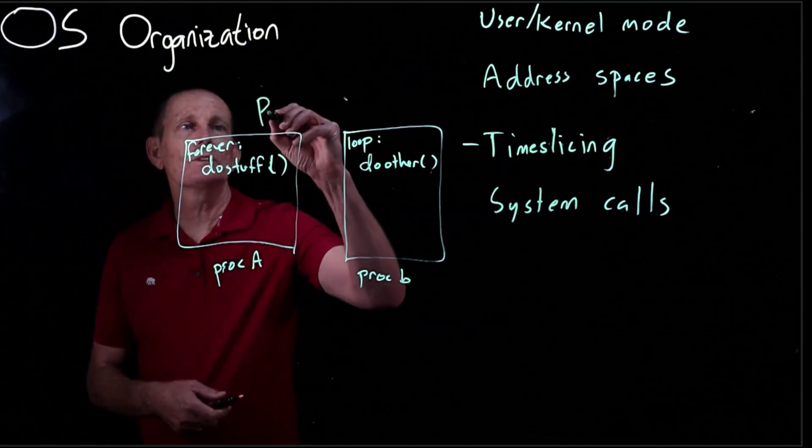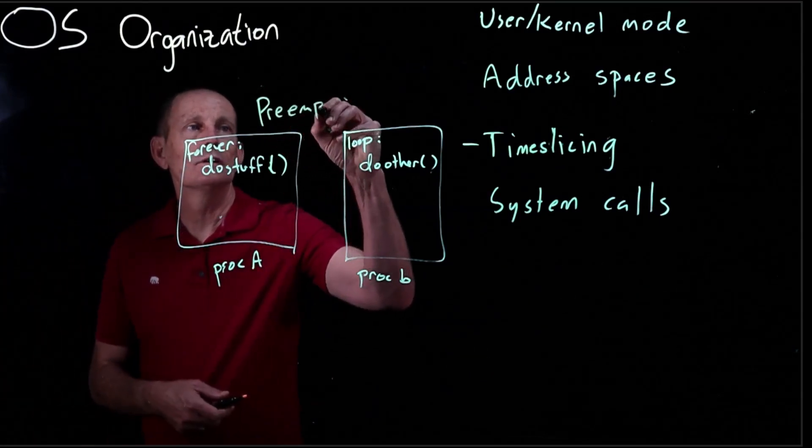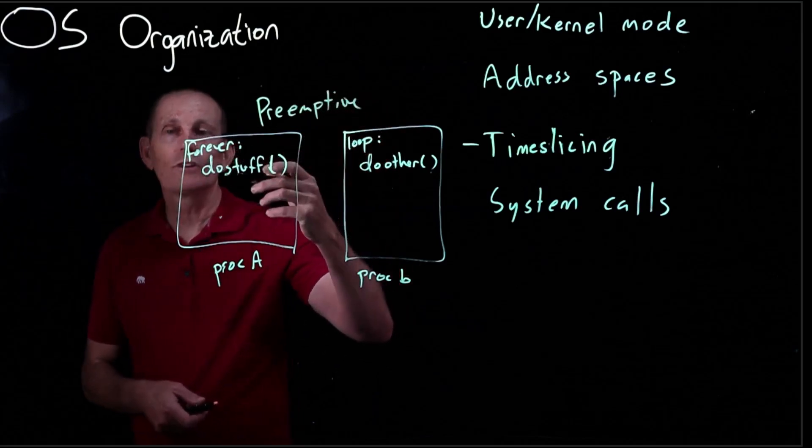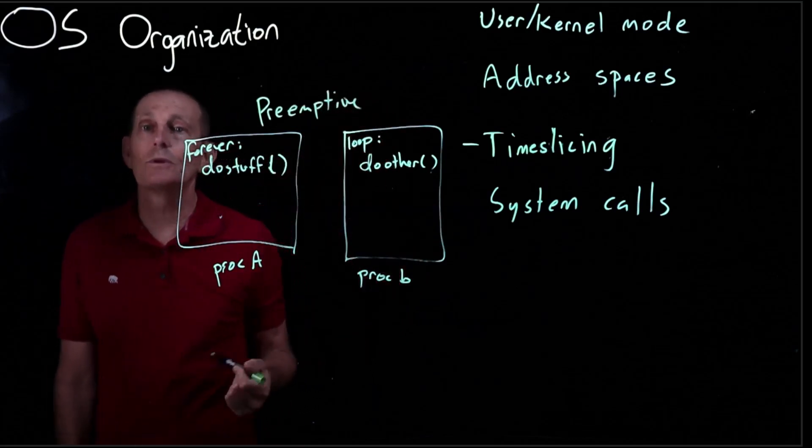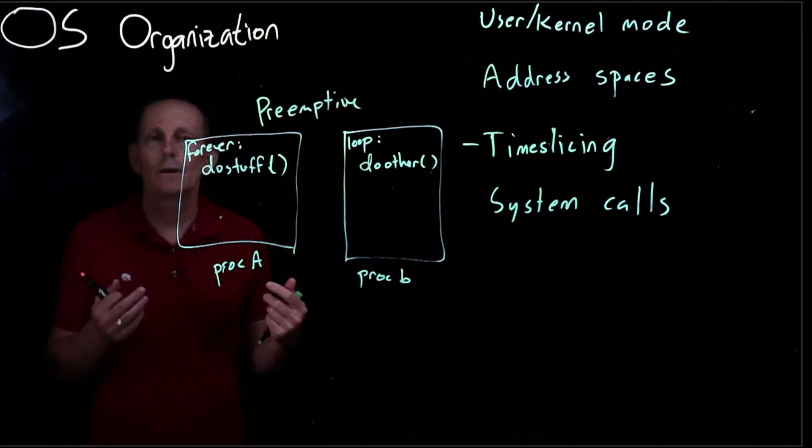Alright instead of cooperative let's look at preemptive. So in the preemptive case we've got process A doing its stuff, process B doing its other stuff and we still want to share time. So how can that work?